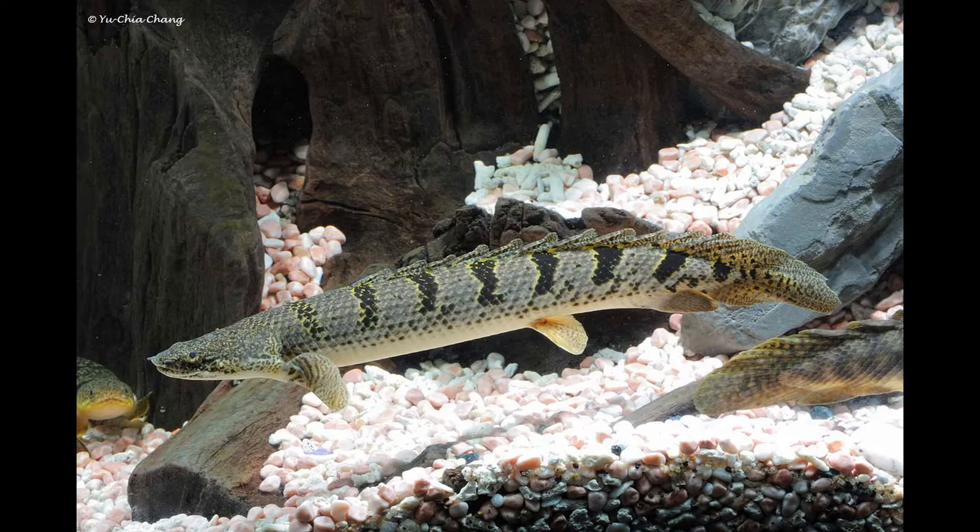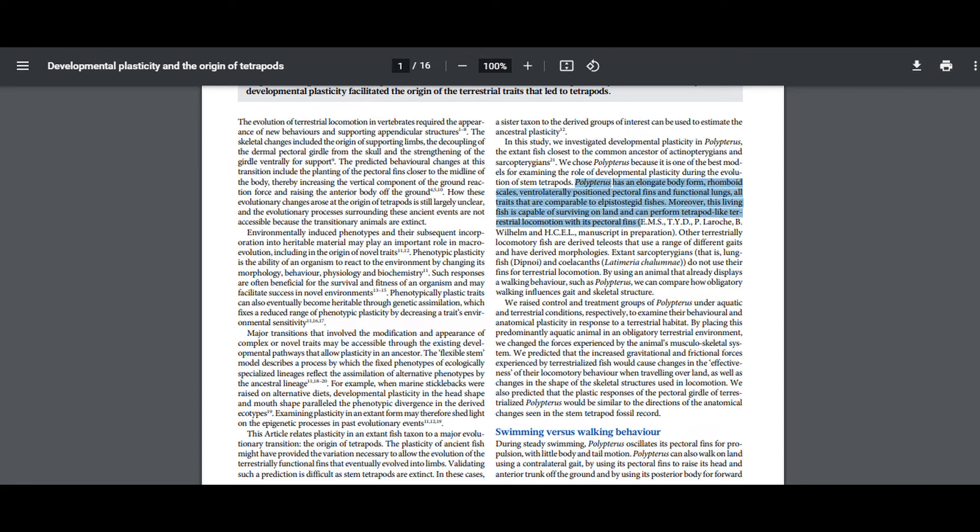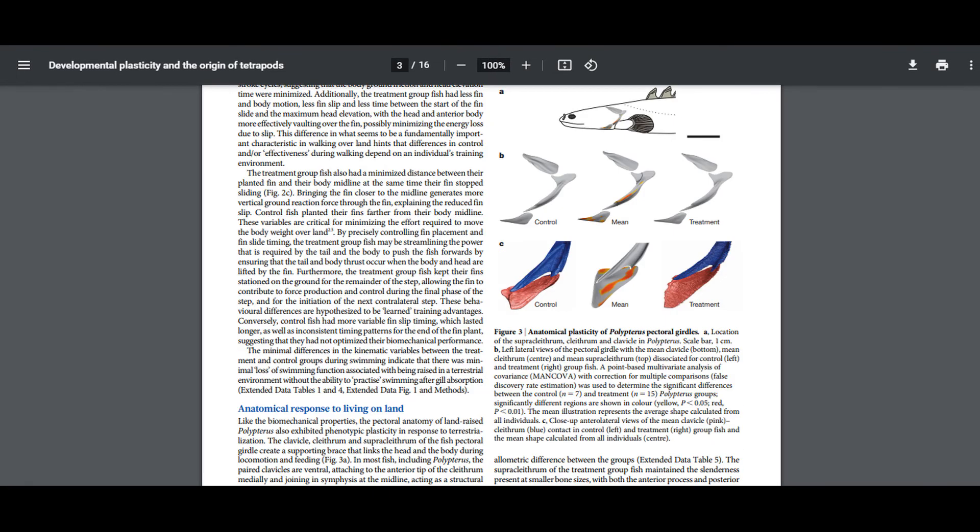As there are no elpistostegids around today to directly test, the researchers picked what they consider a good analog, the Bichir polypterus. Bichirs are the most basally-derived extant actinopterygians, and the authors write, polypterus has an elongate body form, rhomboid scales, ventrolaterally positioned pectoral fins, and functional lungs, all traits that are comparable to elpistostegid fishes. Moreover, this living fish is capable of surviving on land and can perform tetrapod-like terrestrial locomotion with its pectoral fins. For this experiment, the researchers raised two groups of Bichirs, one raised in water and one raised on land.